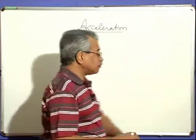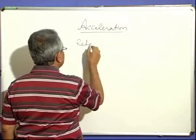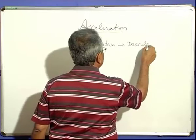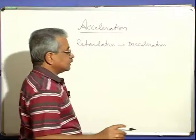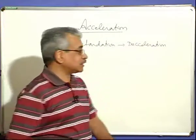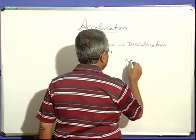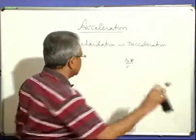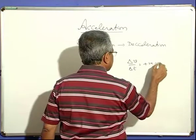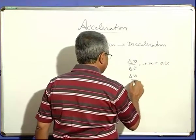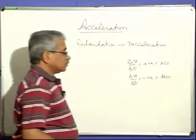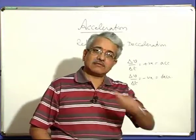With reference to acceleration, we also use the term retardation, also known as deceleration. When velocity is increasing — meaning delta V by delta t is positive — we call it acceleration. When delta V by delta t is negative, we call it retardation or deceleration. Deceleration is not different from acceleration; it is simply acceleration acting in the reverse direction.